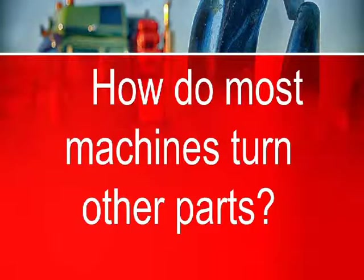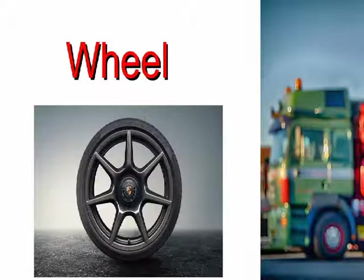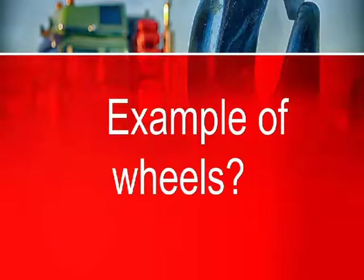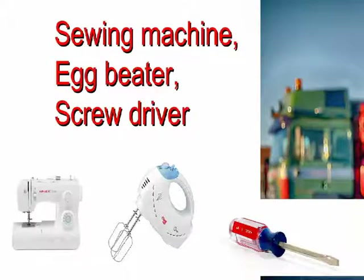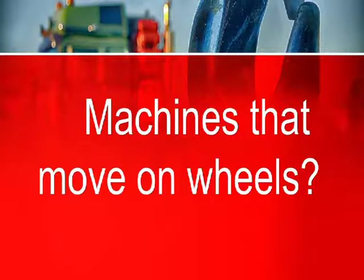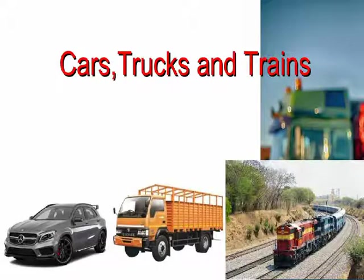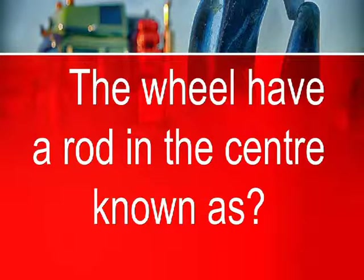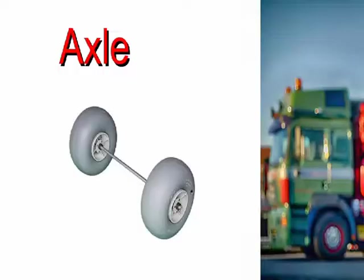How do most machines turn other parts? Wheel. Examples of wheels: sewing machine, egg beater, screwdriver. Machines that move on wheels: cars, trucks, and trains. The wheel has a rod in the center known as the axle.